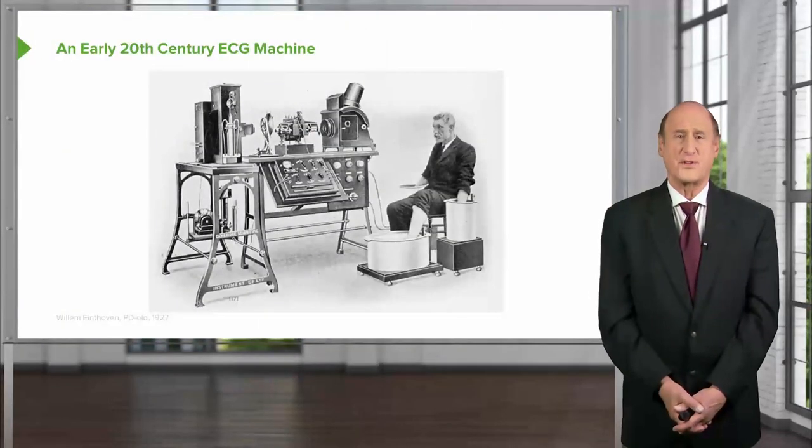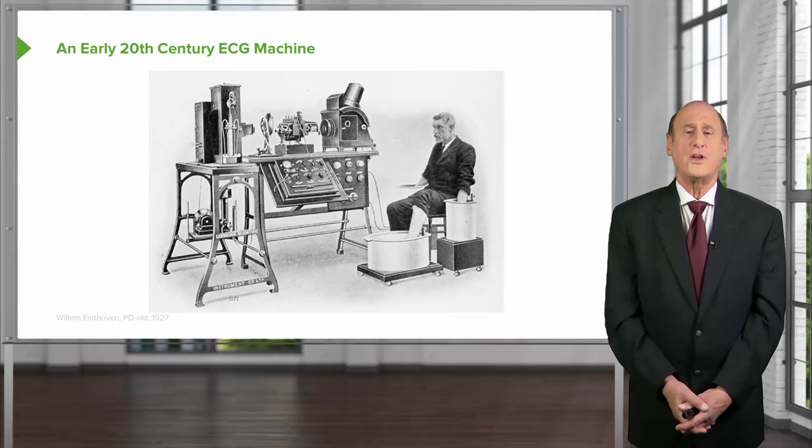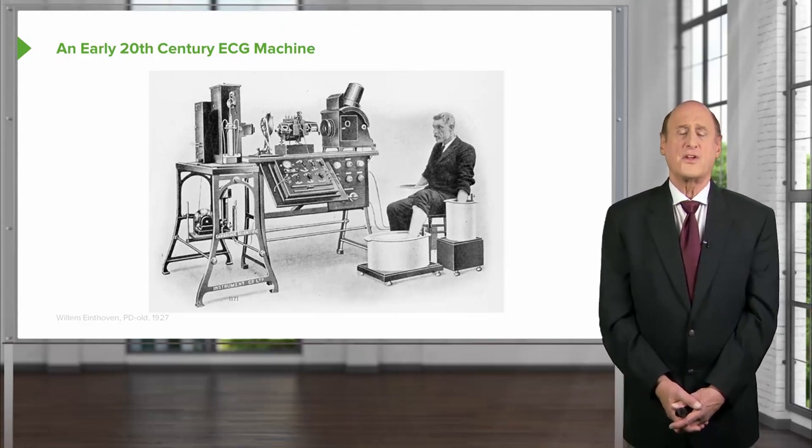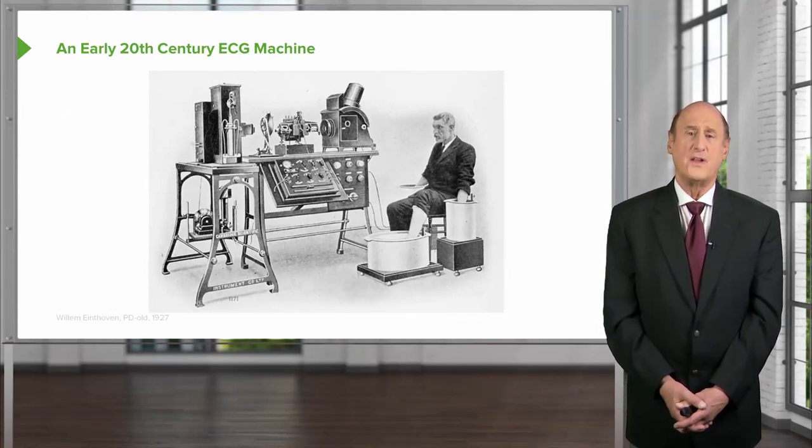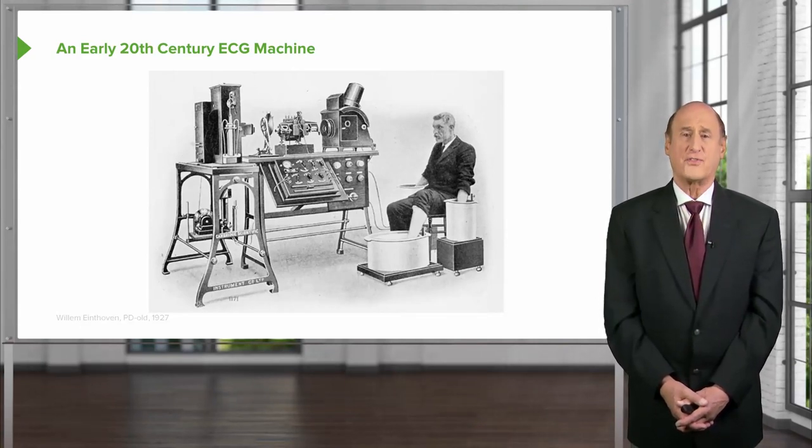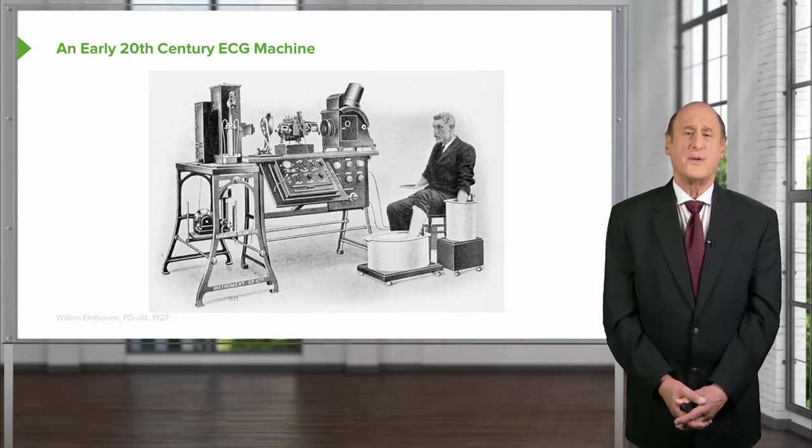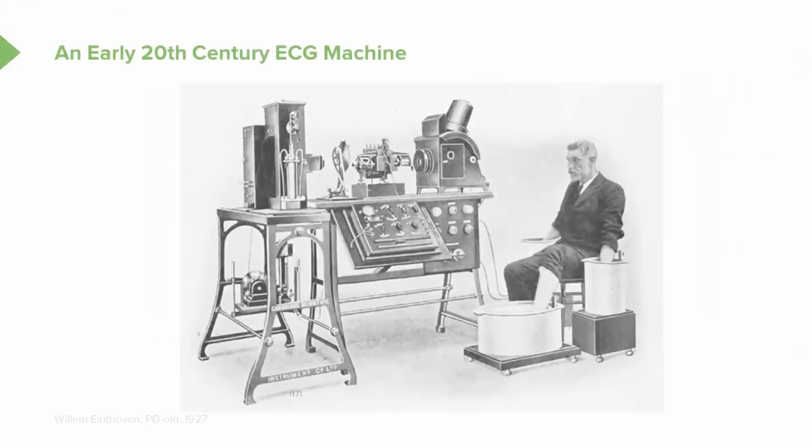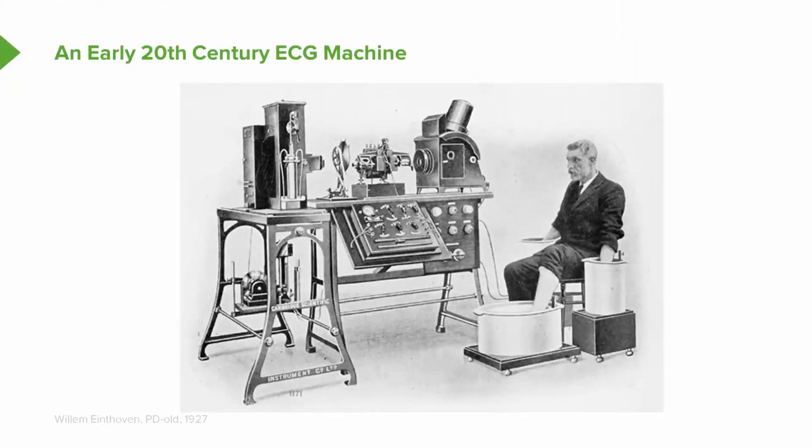So when did the electrocardiogram start? It started in the early 20th century. A Dutch physician named Eindhoven was the first to be able to record the electrical activity of the heart with any accuracy. Many had tried before but he was the first that was successful. Now you can see from this very primitive early electrocardiogram one had to have an arm in saltwater and a leg in saltwater and a huge apparatus in order to record the electrocardiogram.